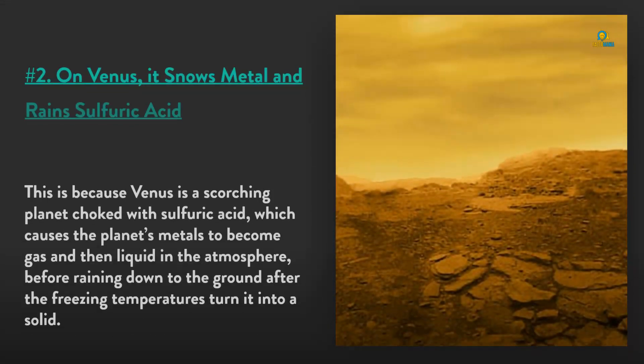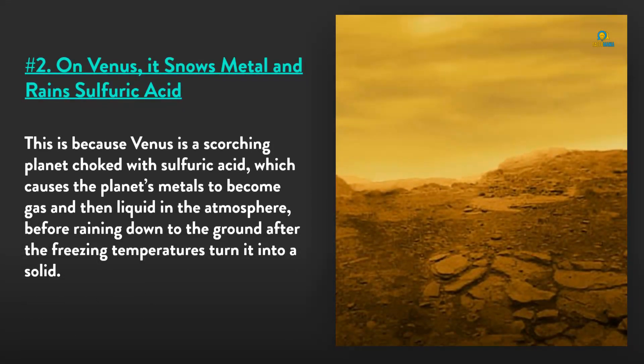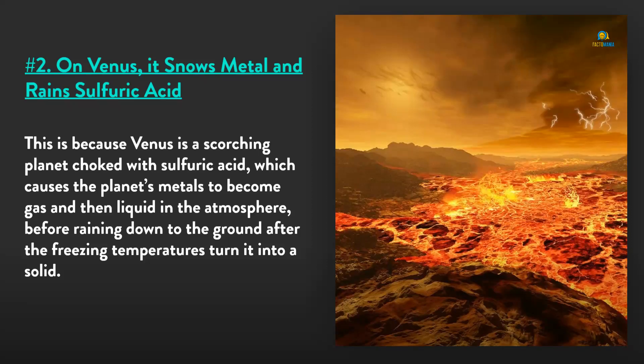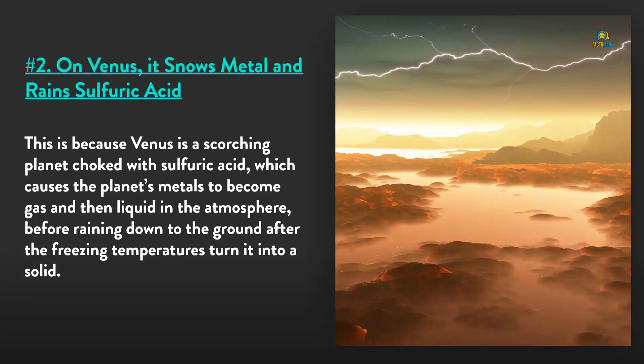Number 2: On Venus, it snows metal and rains sulfuric acid. This is because Venus is a scorching planet choked with sulfuric acid, which causes the planet's metals to become gas and then liquid in the atmosphere before raining down to the ground, after the freezing temperatures turn it into a solid.